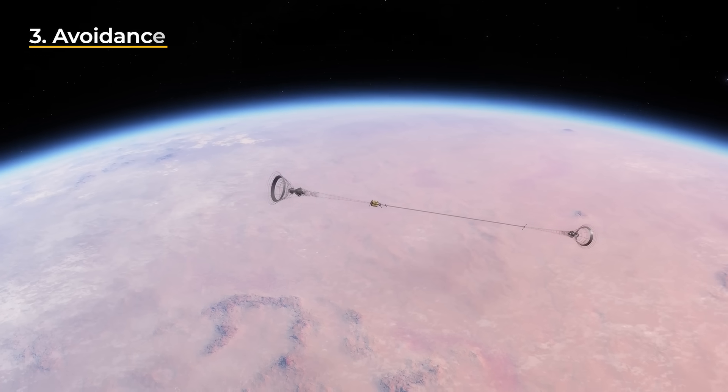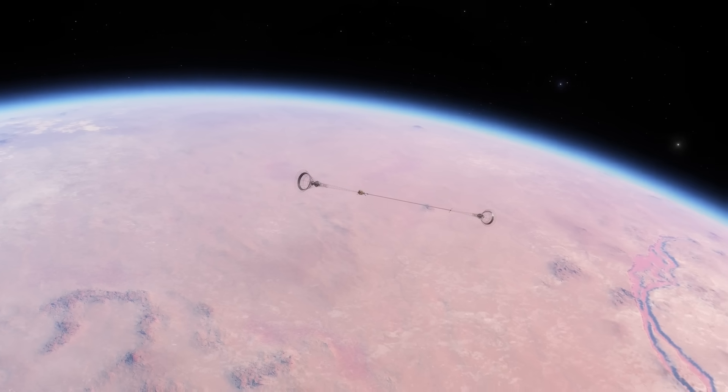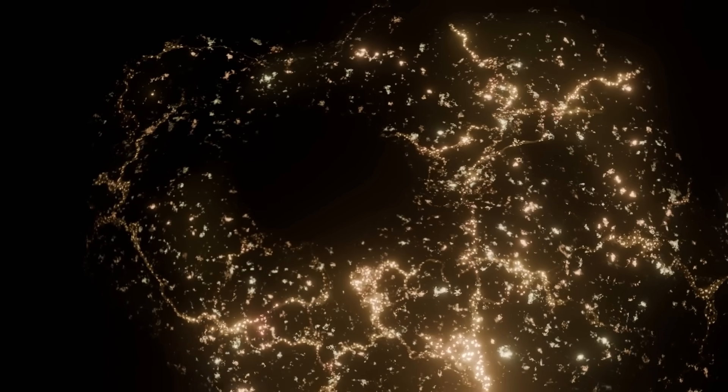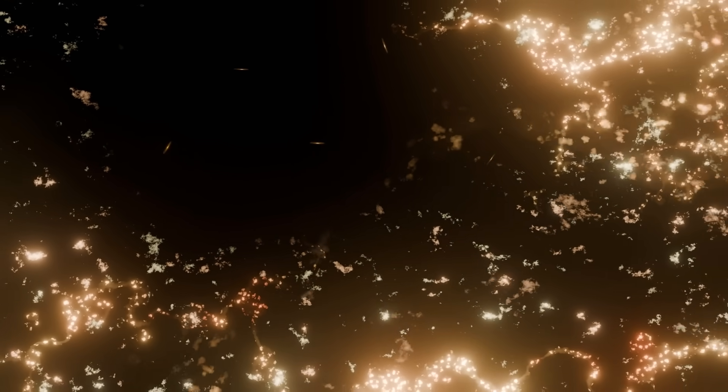The third is avoidance. Civilizations may choose to avoid contact with less advanced societies, or might simply be unaware of our existence due to our location in a sparsely populated area like the KBC void. The characteristics of this void suggest that intelligent life is more likely to develop in crowded regions of the universe, where resources and interaction are more abundant. As a result, these civilizations might overlook or not prioritize exploring less populated regions like ours, making contact with us less likely. This perspective provides a likely explanation for the Fermi paradox, highlighting that while intelligent life may exist, our position in a vast empty region of the universe may render us largely disconnected from it.